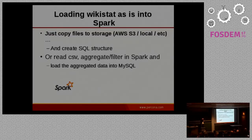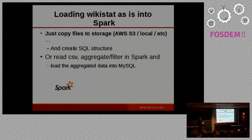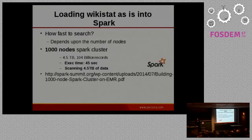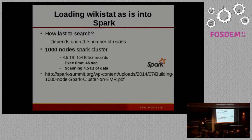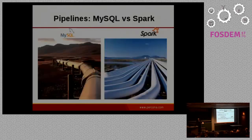Loading the Wikistats data into Spark is much easier. You just copy files to any storage you like, then create a SQL structure over it, or read the CSV, aggregate, transform, and load it — for example into MySQL — but all processed in parallel. You don't need all 10 terabytes, only the data you need. There's a Spark Summit example showing that without MySQL involvement, scanning four and a half terabytes of data took only 45 seconds. Impressive — because pipelines. MySQL is one pipeline; Spark is multiple pipelines in parallel, giving much bigger throughput.